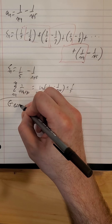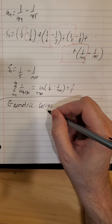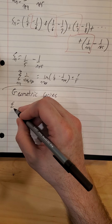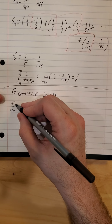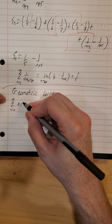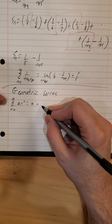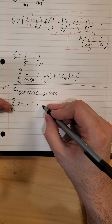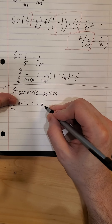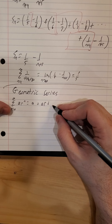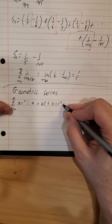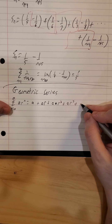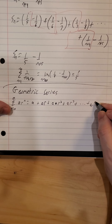The next type of series we look at is a geometric series. The idea is we have some common ratio — some common number that we keep multiplying by. Starting at n=0 and going to infinity: if n=0, r^0 is 1 so the term is just a; if n=1, it's a times r; if n=2, it's a times r squared; and so on — a·r³ + dot dot dot + a·r^n + dot dot dot.